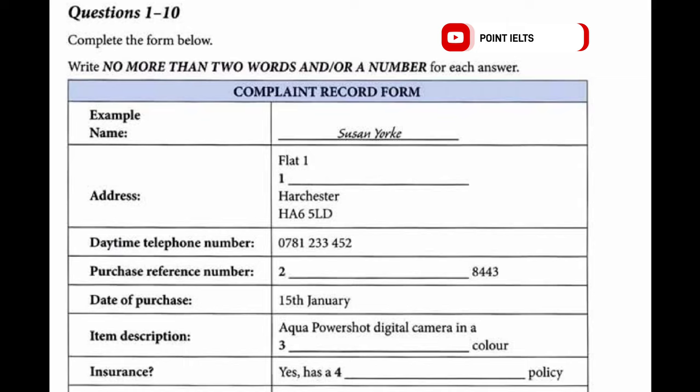OK, next. Could you give me your telephone number, preferably one that we can call you on during normal working hours? Well, the home one is 01734-525-268, but you're only likely to catch me on that number in the evenings. I usually have my mobile phone with me during the day, though. It's probably best to take that number, then. All right. My mobile number is 0781-233-452.